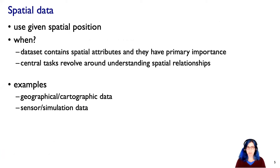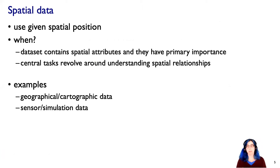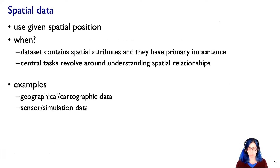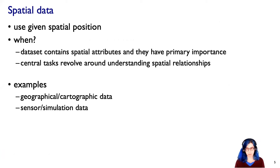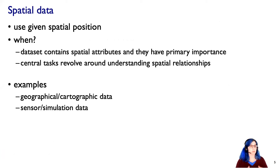When would we want to do this? If the data set contains spatial attributes and they have primary importance — that is, the central task of the user really does revolve around understanding those spatial relationships. That happens in contexts like geographic or chorographic data, typically in two dimensions, or some sort of measurements or simulations of the real world, like sensor data or simulation data. Let's talk through each of these in turn.